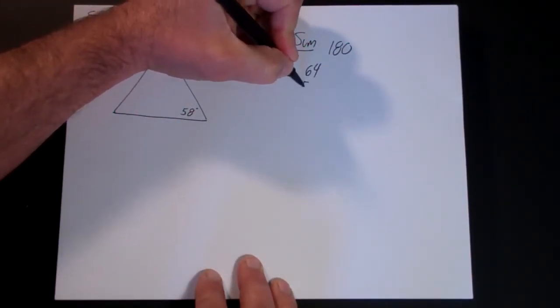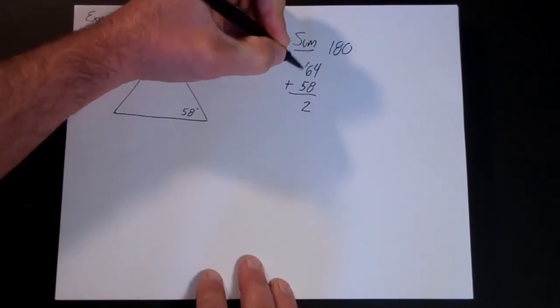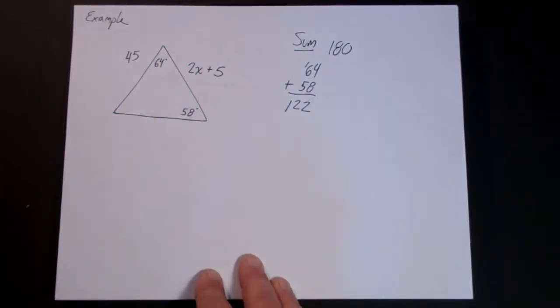We have two angles, so we can add these two angles up: 64 and 58. 12, carry 1, 11, 12, so that's 122.